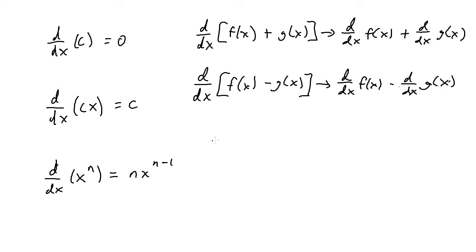The final rule is when we take the derivative of e to the x. This one's pretty easy because the derivative of e to the x is the same thing — it remains as e to the x. These basic fundamental rules need to be applied over and over again throughout calculus, and by midway through calculus 1 you'll have them memorized instantly.